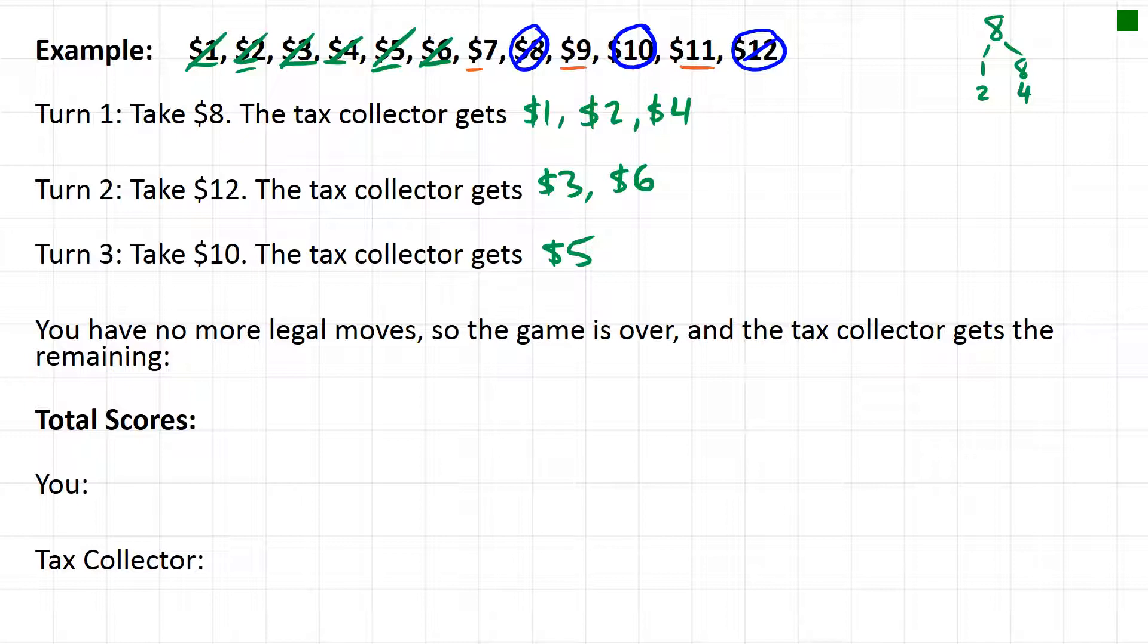So I can take no more legal moves. The game is over and the tax collector gets seven, nine, and eleven. So let's total up these scores.